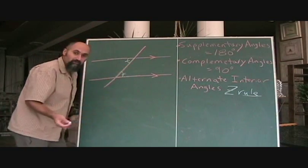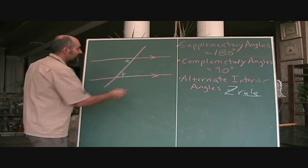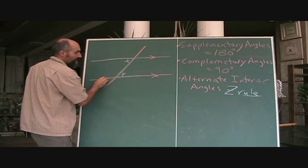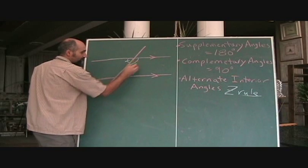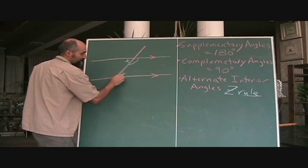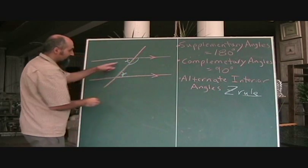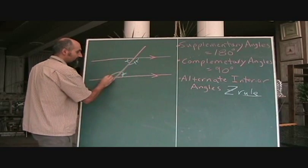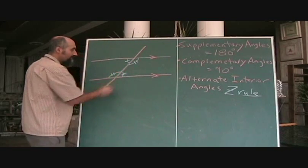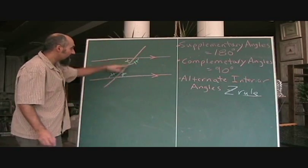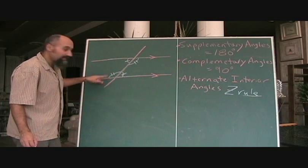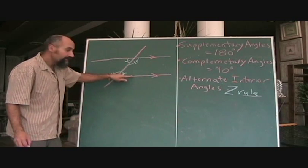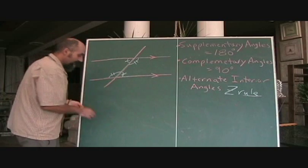The Z rule can also work backwards. You could have a Z going the other way, using one tick to show that the angles are the same. So this angle equals that angle, and this angle equals that angle — there's your backwards Z and your forwards Z. That's the alternate interior angle.